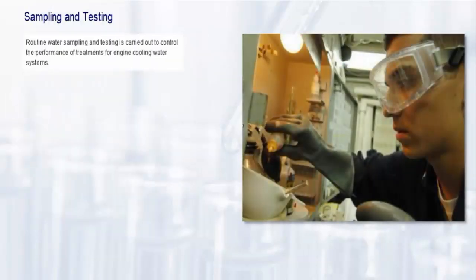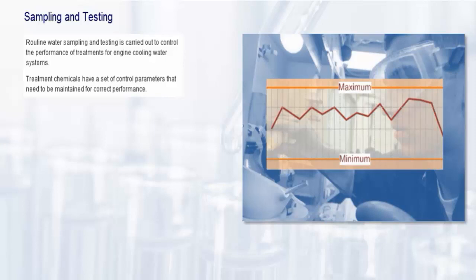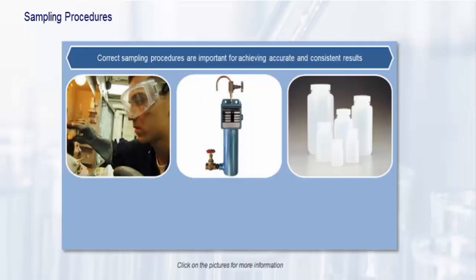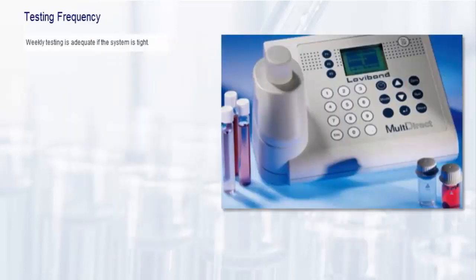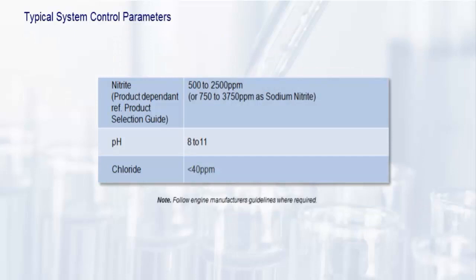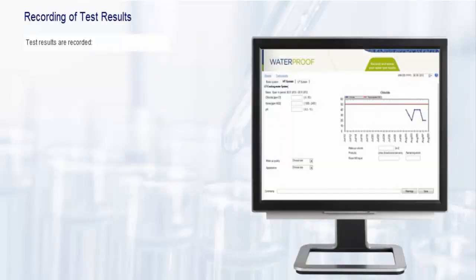Routine water sampling and testing is carried out to control the performance of treatments for engine cooling water systems. Most treatment chemicals have a set of control parameters that need to be maintained for correct performance. Appropriate sampling frequency and procedures are important to get consistent results. Weekly testing is adequate if the system is tight. More frequent testing is advised if there are significant water losses. If the systems are experiencing problems, higher testing frequency will be required. Typical control parameters are shown in the table below. It is important that test results are recorded both for quality purposes and to help with the interpretation of trends. This enables corrective decisions to be made quickly and effectively.